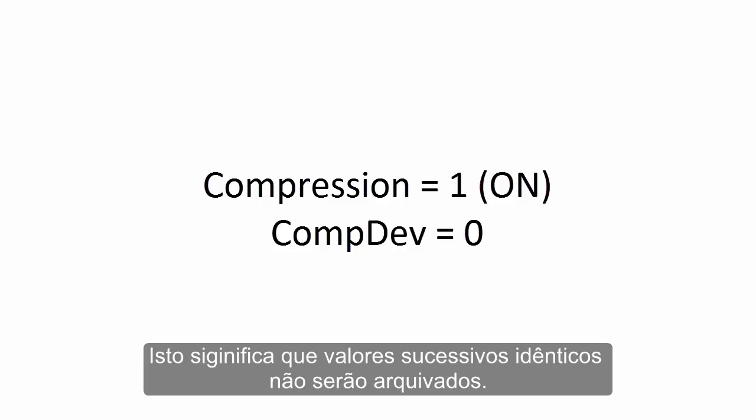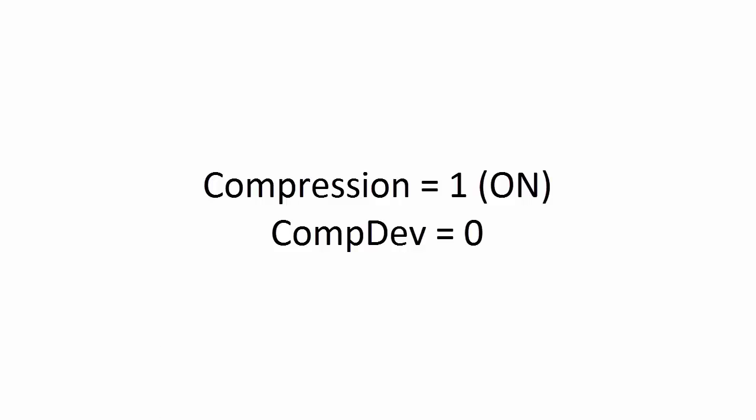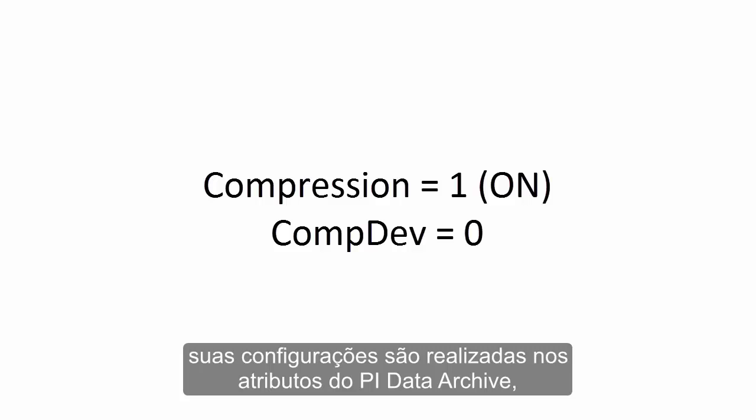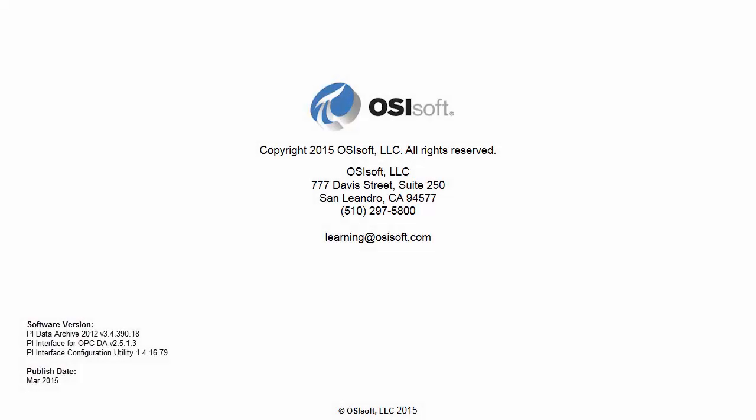Setting compression deviation to 0 means successive identical values will not be archived. In summary, in this video we saw why it is important to have exception and compression testing, how settings are configured on the PI Data Archive PI Tag attributes, and how we implement basic exception and compression testing.